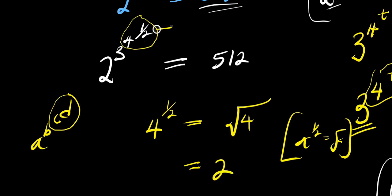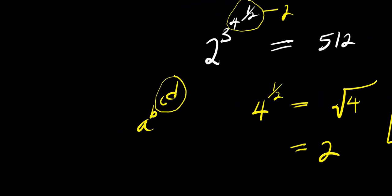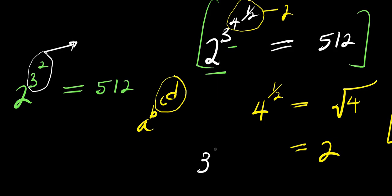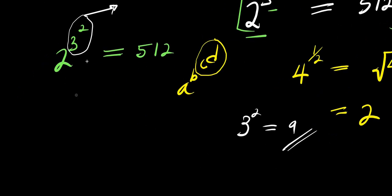We replace 4 to the power of 1/2 with 2. The new expression becomes 2 to the power of 3 to the power of 2, and this equals 512. Now we evaluate the top exponent: 3 to the power of 2 is 3 times 3, which is 9. So we replace 3 to the power of 2 with 9, giving us 2 to the power of 9, and this equals 512.